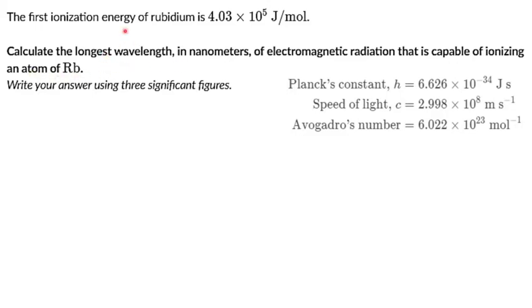In this case, the ionization energy value is given. Ionization energy is the energy required to remove the outermost electron. For removing that electron, electromagnetic radiation of some wavelength is given, which we need to calculate.